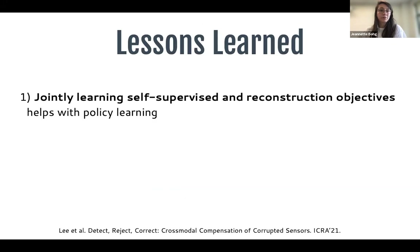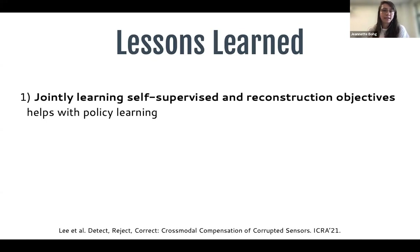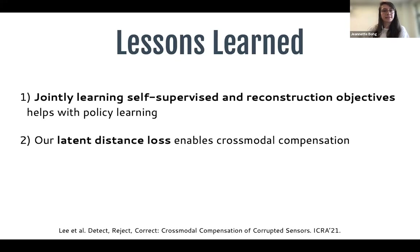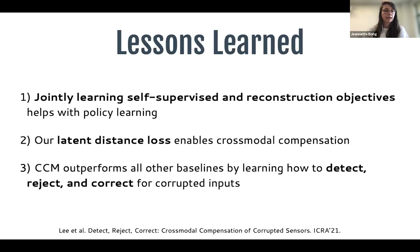Key takeaways from the CCM work: jointly learning with self-supervised and reconstruction objectives helps with policy learning. The latent distance loss enables cross-modal compensation. This model outperforms all baselines by learning to detect, reject, and correct for corrupted inputs at test time.